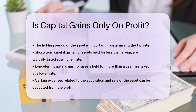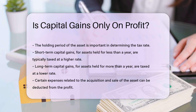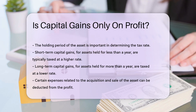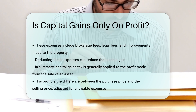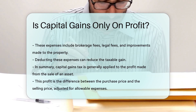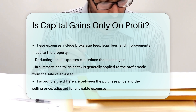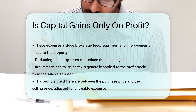It is also important to consider that certain expenses related to the acquisition and sale of the asset can be deducted from the profit. These include brokerage fees, legal fees, and improvements made to the property. This can reduce the taxable gain.